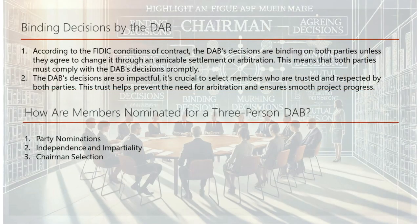Binding decisions by the DAB: According to the FIDIC conditions of contract, the DAB's decisions are binding on both parties unless they agree to change it through an amicable settlement or arbitration. Both parties must comply with the DAB's decisions promptly. Because the DAB's decisions are so impactful, it's crucial to select members who are trusted and respected by both parties, helping prevent the need for arbitration and ensuring smooth project progress.